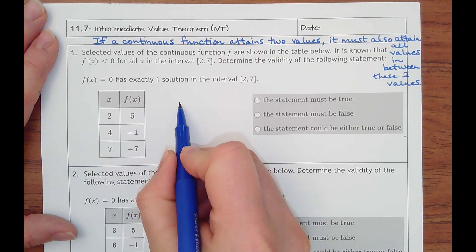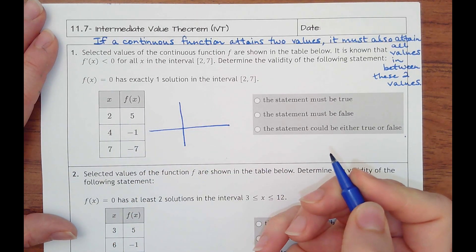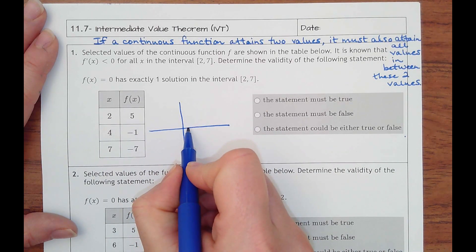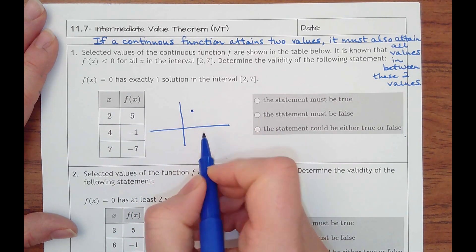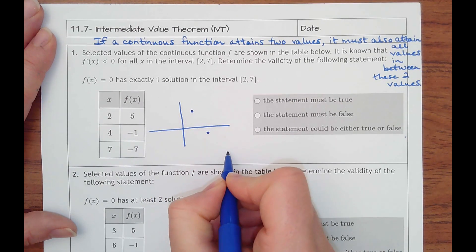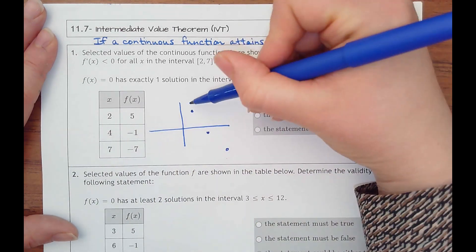f of x equals zero has exactly one solution in the interval two to seven. The best thing that I can recommend is just sketching a graph of the points, and then we can really tell what's happening. So we've got a point at two, five. Let's say it's here. Four, negative one, seven, negative seven. Something like that.